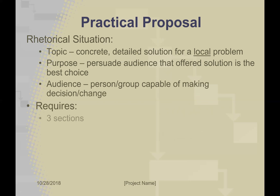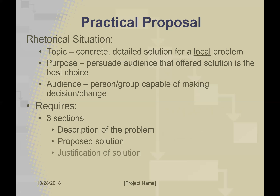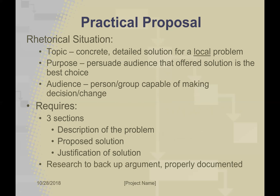A practical proposal requires three sections, and you're encouraged to use section headings in the written document. The first is a description of the problem — that local problem you've decided to try to fix — described with enough detail so your audience understands what you're attempting to resolve. Then you'll include a proposed solution, providing step-by-step detail of how to fix the issue. Finally, a justification of the solution — probably the meatiest portion — where you explain why your proposed solution is the best choice. This argument must have research to back it up, and you must properly document that research.